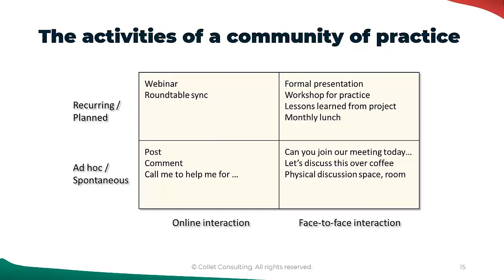Following that, recurrent roundtable webinars can be planned to bring all people sharing the same concerns or interests to the same page. After one or two months, face-to-face regular meetings and more formal presentations can be planned to improve the practice continuously. We can see that there is a natural learning path in the creation of a community of practice and each type of activity has its own role and purpose. The learning path usually brings the activities from informal to formal form, re-utilizing elements such as videos, comments, and conversations already generated in the informal activities.